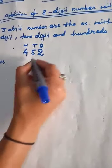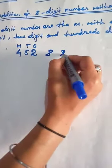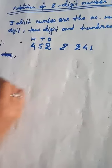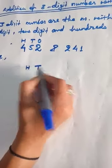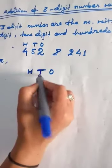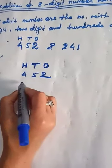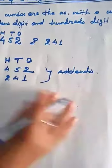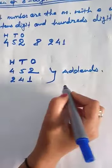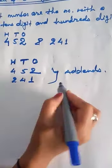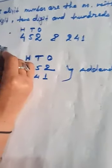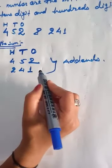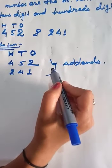Let's take two three-digit numbers: 452 and 241. We write the places as hundreds, tens, and ones. 452 and 241 — these two numbers are called addends. The result after adding two addends is called the sum. Find the sum.